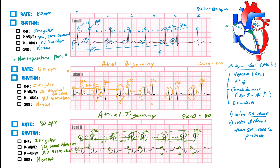To summarize what you need to know about PACs: they come early and their P wave looks abnormal. Look for patterns — bigeminy, trigeminy, and there can even be quadrigeminy. The pause between a PAC and the next normal P wave/QRS complex is called a non-compensatory pause — that's important test material. We'll cover pathophysiology, causes, treatment, and diagnostics in a dedicated PAC video. Next up: PVCs.